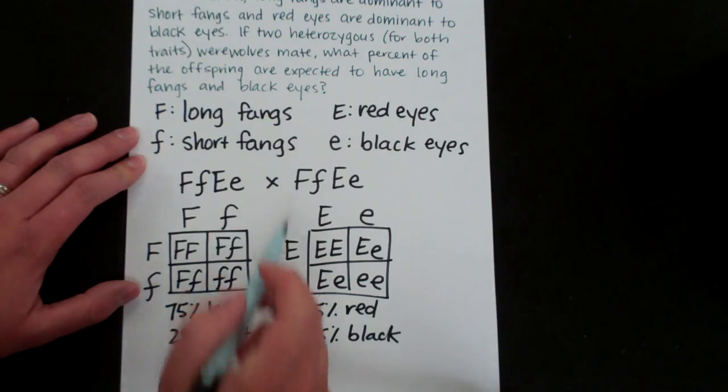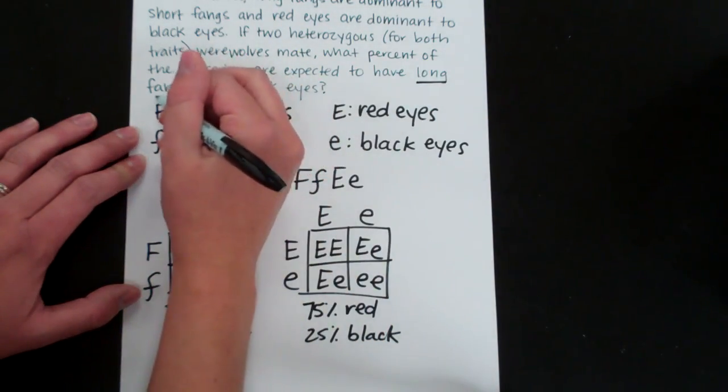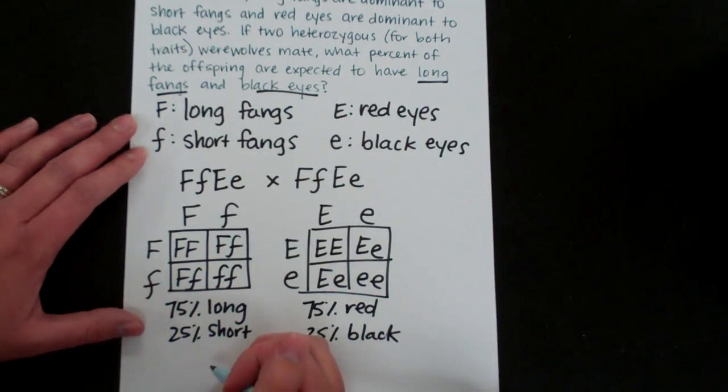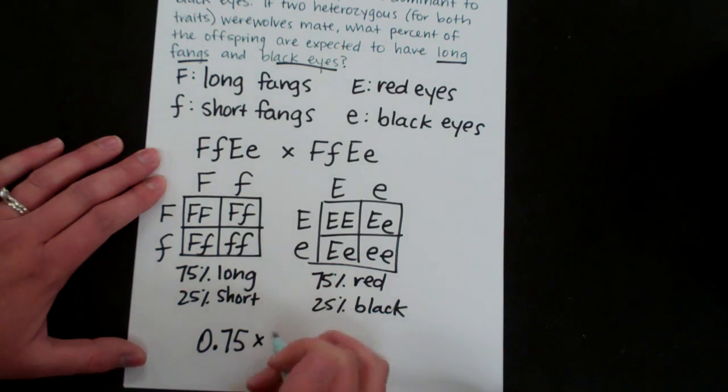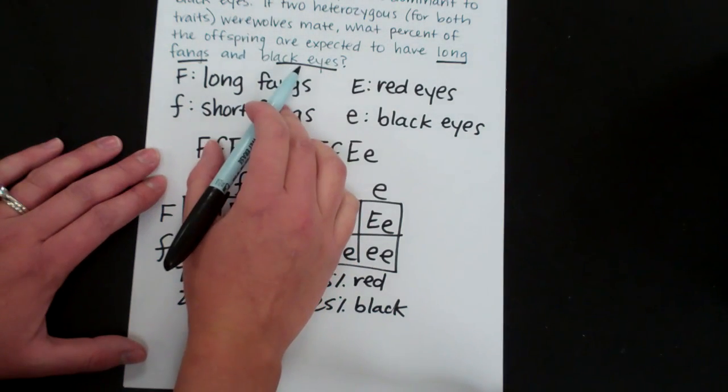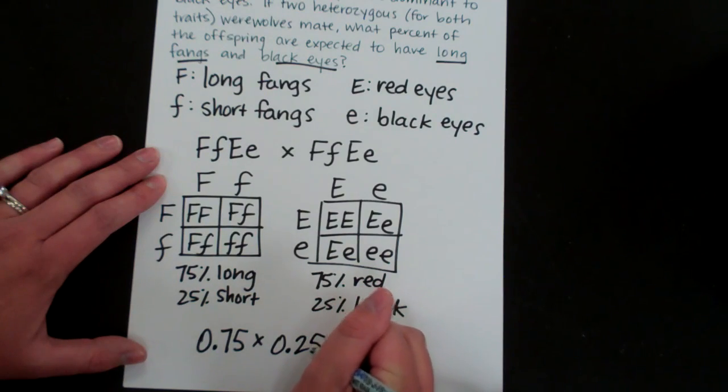So the question asks what percent of the offspring are expected to have long fangs and black eyes? So long fangs, that chance would be 75%. So there's a 75% chance or 0.75 that the offspring would have long fangs. And then for black eyes that is a 25% chance. So multiply that times 0.25.